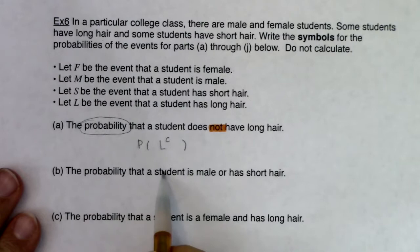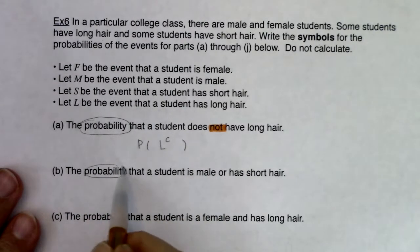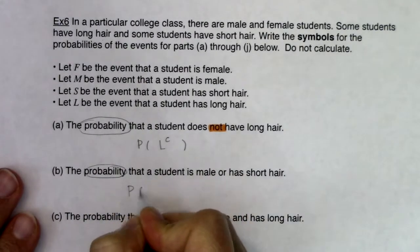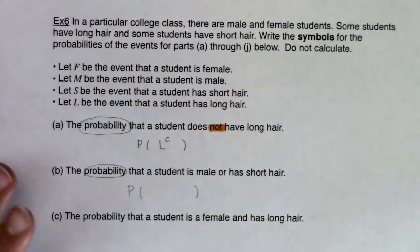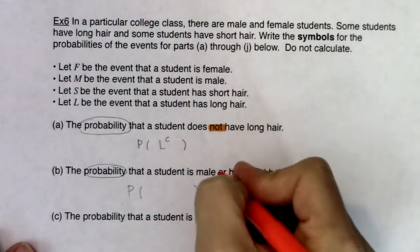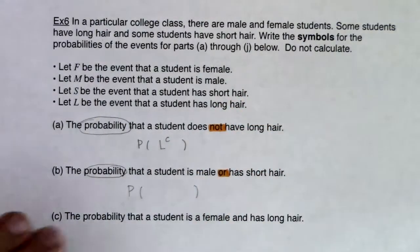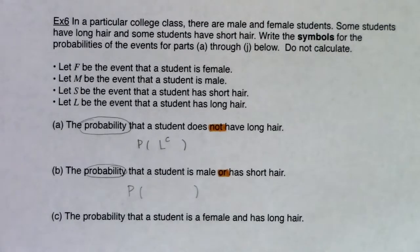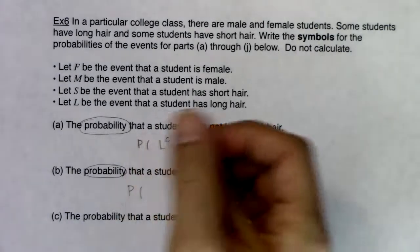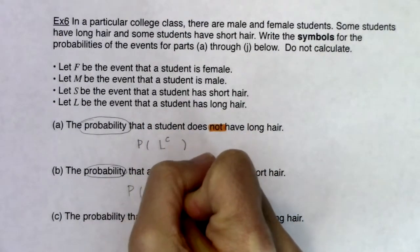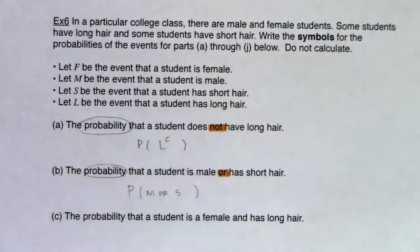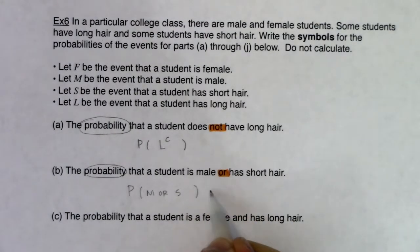The probability that a student is male or has short hair. We've got probability, so I know I have P with some parentheses. The buzzword in this one is the word 'or.' This is male or short hair. If I was continuing on this problem, as soon as I hit that right parenthesis I'd put an equal sign and numbers over here: P(M or S).